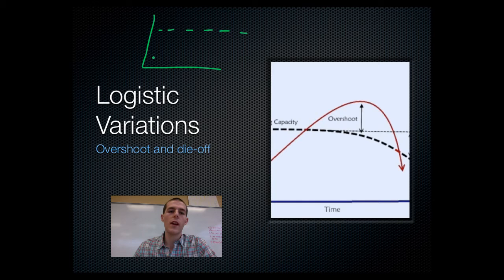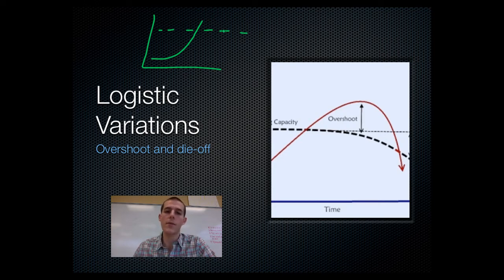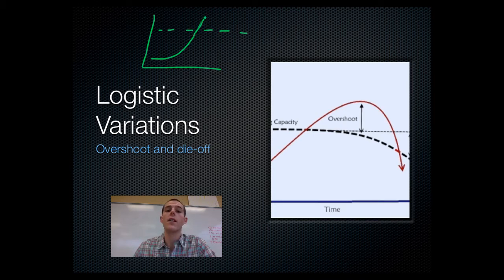Our population will take off in exponential growth. It will surpass whatever the carrying capacity is, and the carrying capacity is going to be based on some limiting factor. Let's say that limiting factor is the availability of water. Our population overshoots that — suddenly there's not enough water to support all of the organisms, so the population crashes. That would be the die-off.